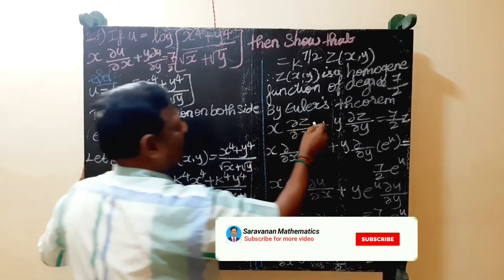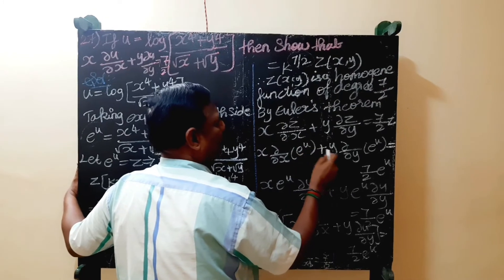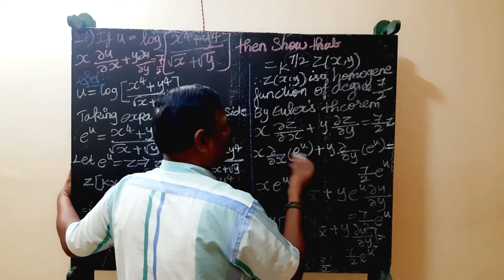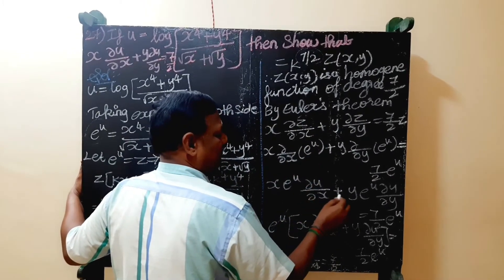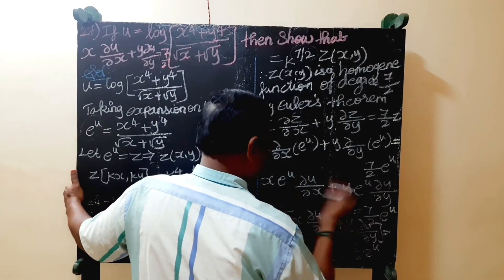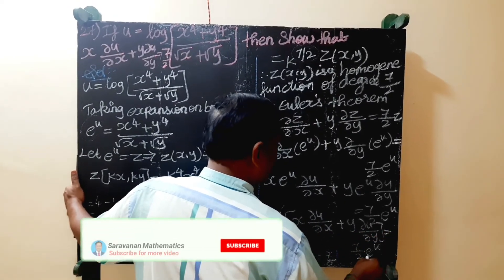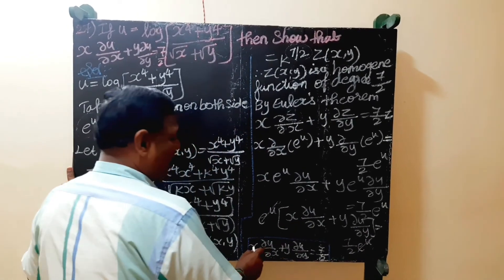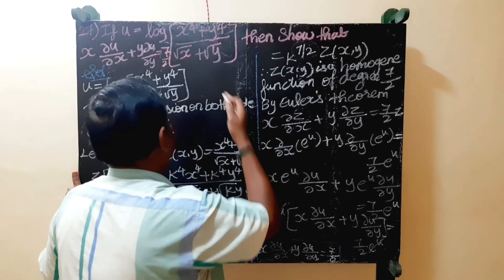Since z equals e power u, we substitute: x dou u by dou x plus y dou u by dou y equals e power u, which equals 7 by 2 into e power u. Differentiating: e power u into dou u by dou x and e power u into dou u by dou y. Dividing both sides by e power u, e power u cancels, giving x dou u by dou x plus y dou u by dou y equals 7 by 2.